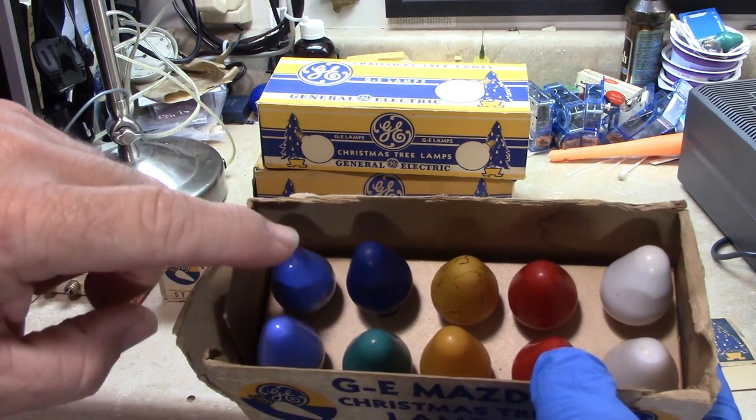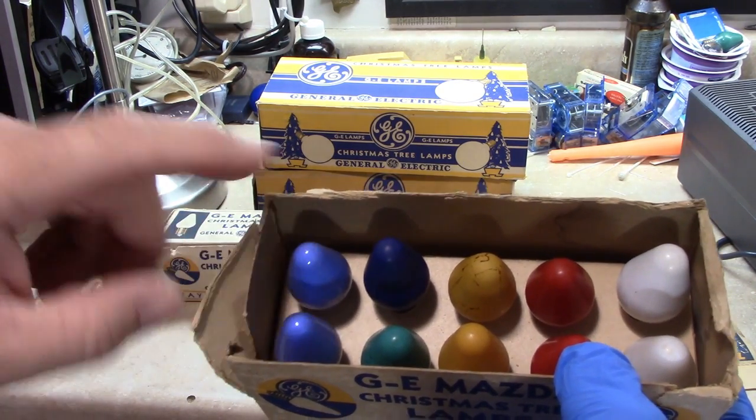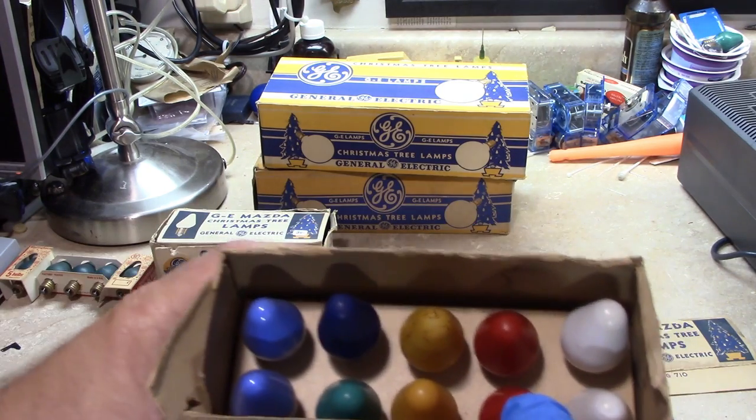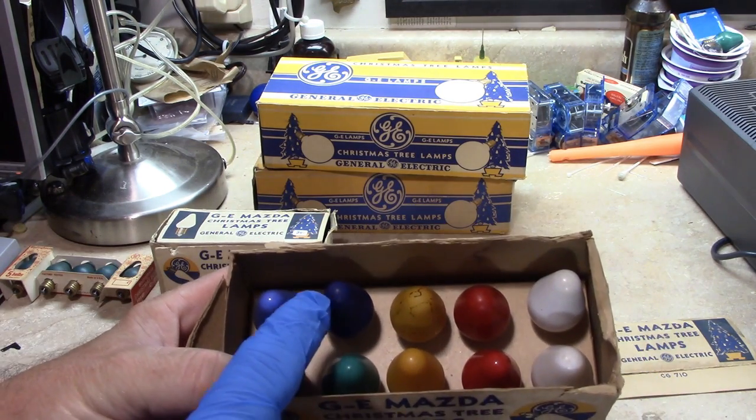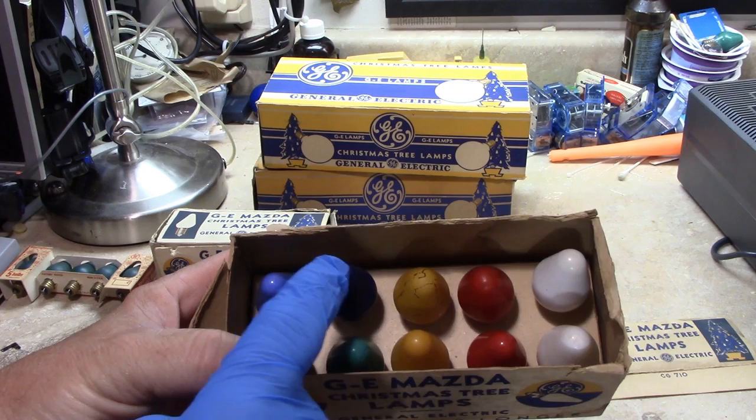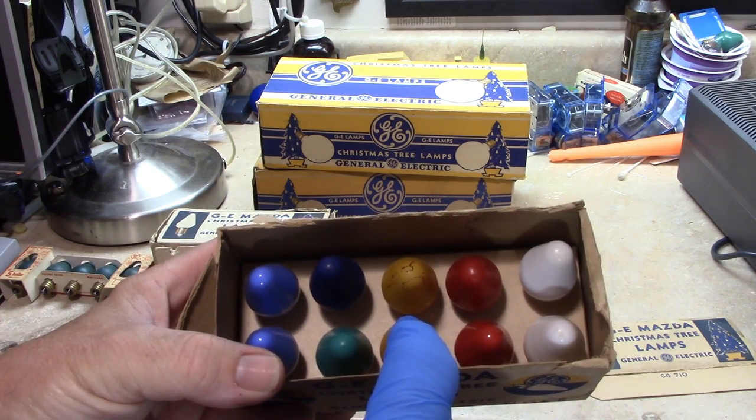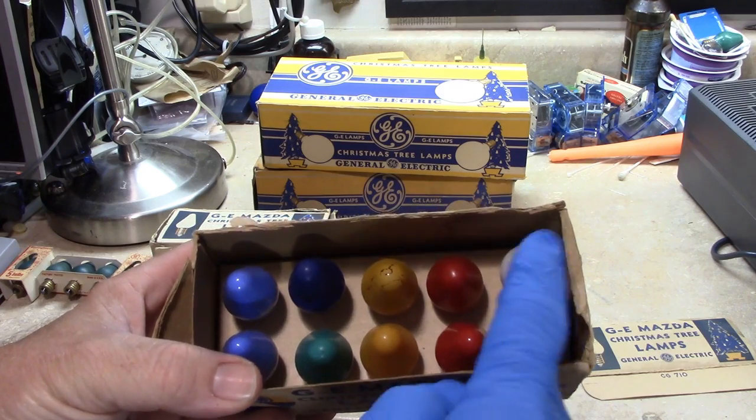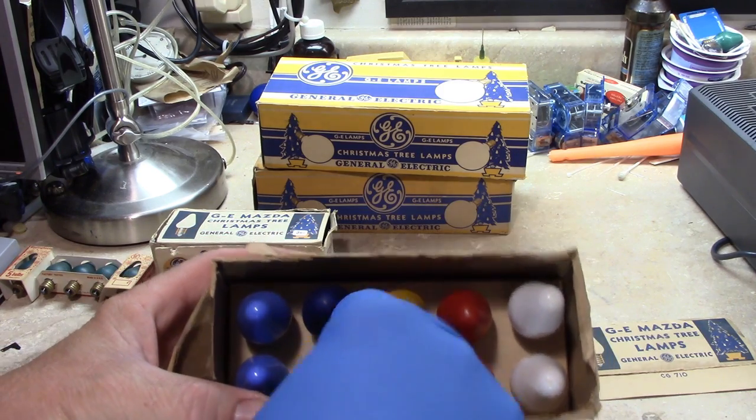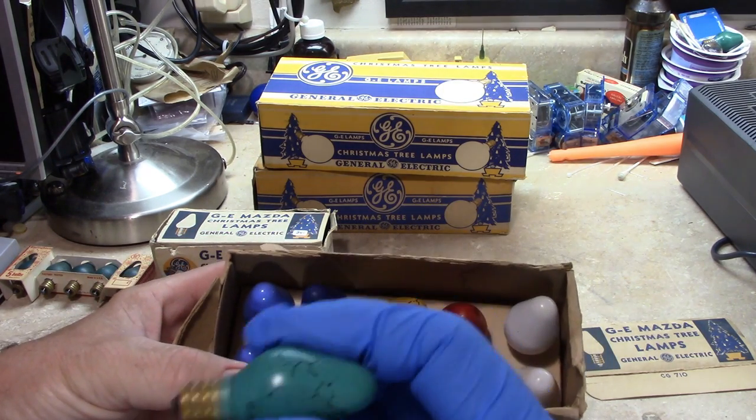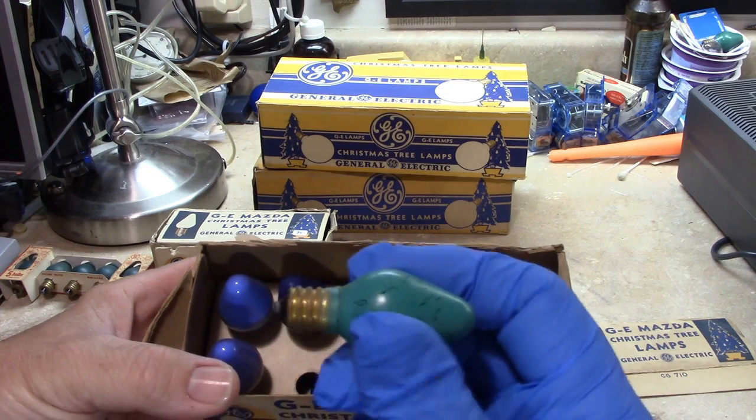I got these because they had the two interior coated C7s. And then I got a good blue of the matte finish, a good orange one, a good red one, and the rest of these are ceramic coated. This green one's in fair condition. It's one of the later ones.